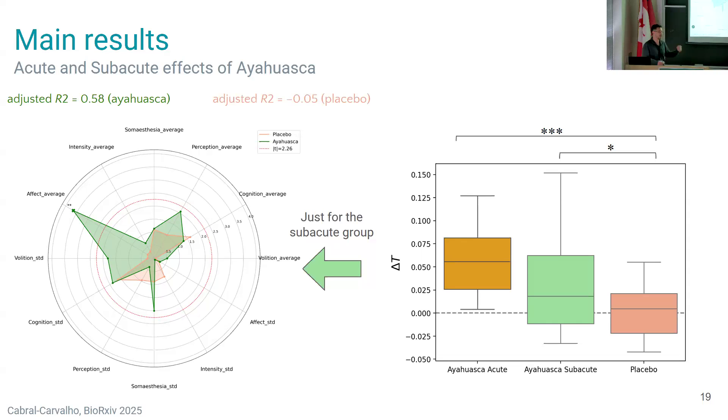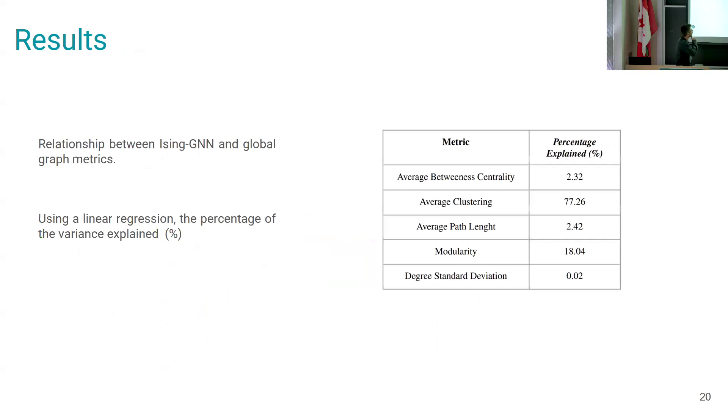If you think about the potential applications of such psychedelics in psychiatry, we want some kind of explainability. So what we can do is basically check which graph metrics actually explain part of the variance of our temperature. We see that, for example, clustering and modularity are quite related to this increasing temperature.